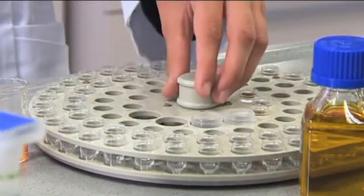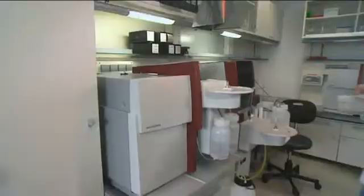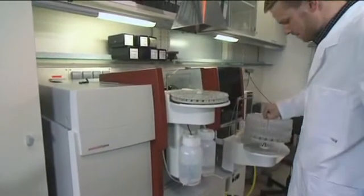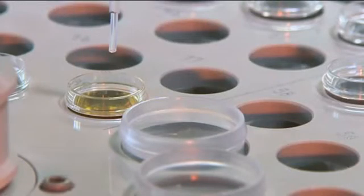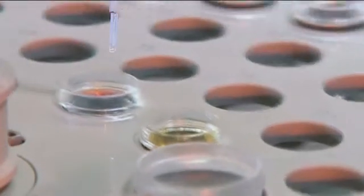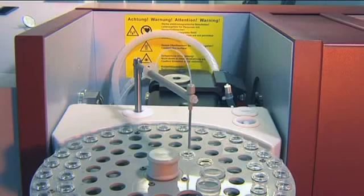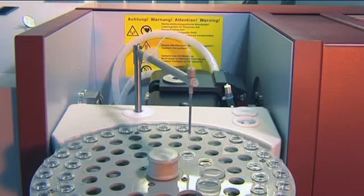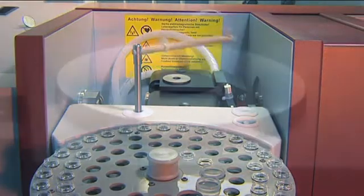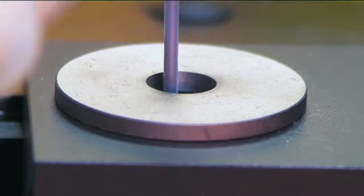The micropipetting unit takes over the preparation of the calibration standards and, if necessary, the dilution or concentration of samples in the graphite furnace. The turntable with 89 positions enables large sample series to be measured automatically.